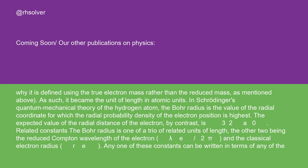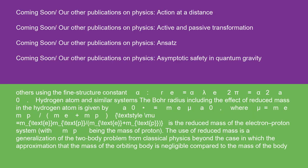the other two being the reduced Compton wavelength of the electron, λₑ/2π, and the classical electron radius. Any one of these constants can be written in terms of any of the others using the fine structure constant α.